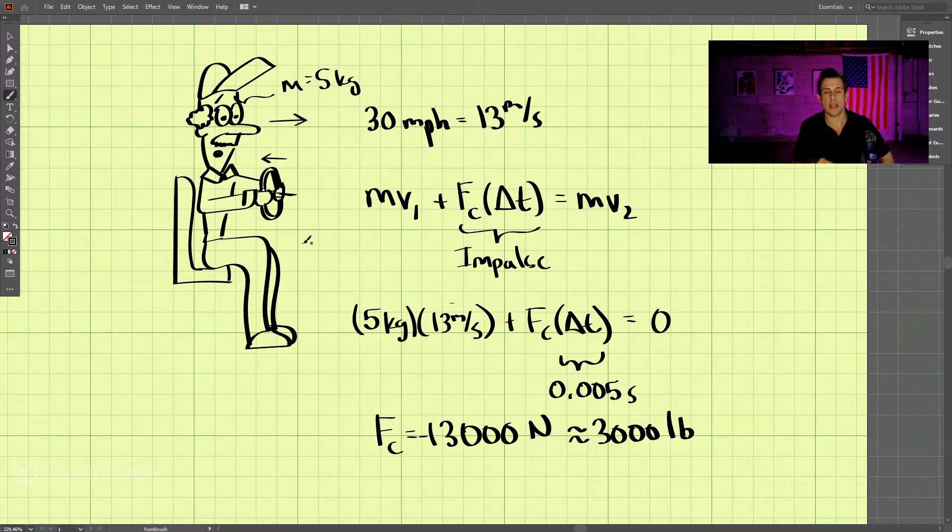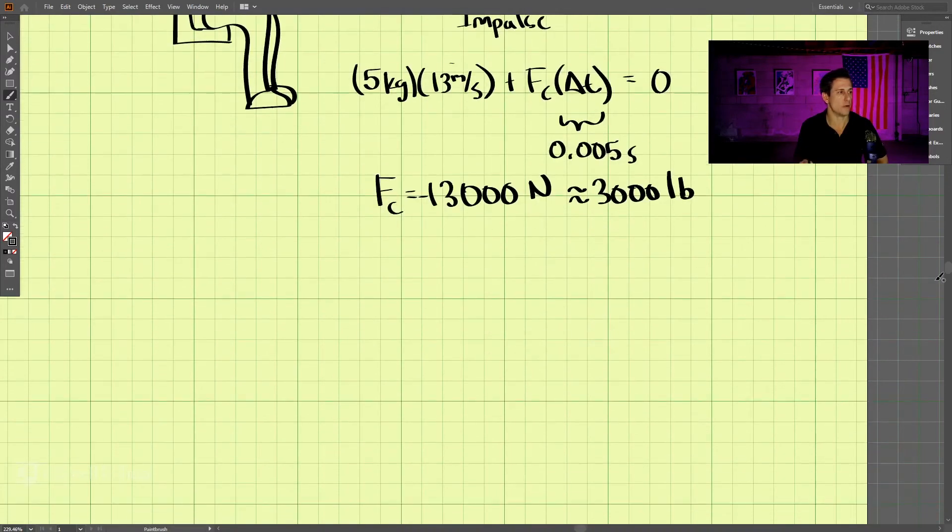Now, since we have modern day cars, we've instrumented airbags into cars. So what is the airbag actually doing? Well, let's take a look at this equation again. So we have MV1 plus some force times delta T equals MV2. The head is still coming to a stop with an airbag. Let's put that at zero. And the initial velocity and the mass is still the same, right? So we have five times 13 still.